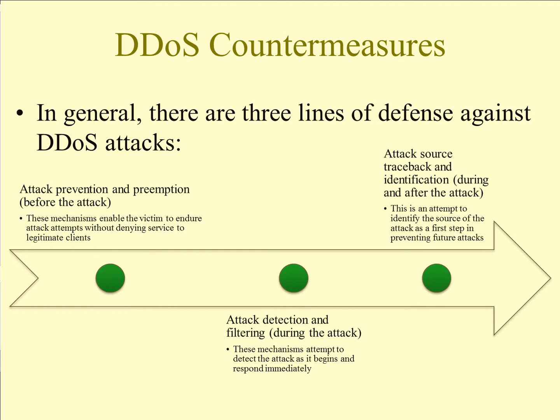The third approach is attack source traceback and identification, which happens both during and after the attack. Attempts to identify the source of the attack are a first step in preventing future attacks. However, this often does not work very well because, especially in a DDoS, the computers that actually performed the attack on the target are not the ones that initiated it — they may have been compromised themselves or were just reflector computers responding the way networks actually work.